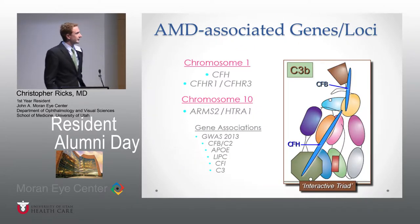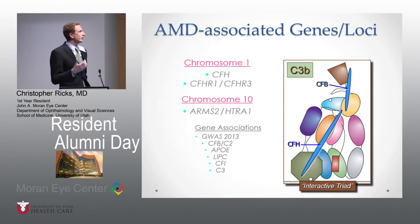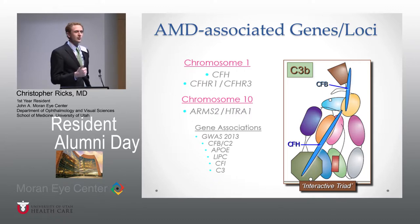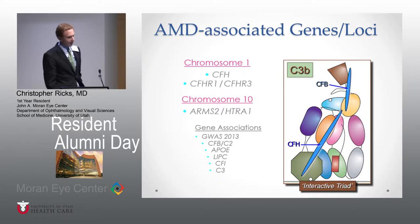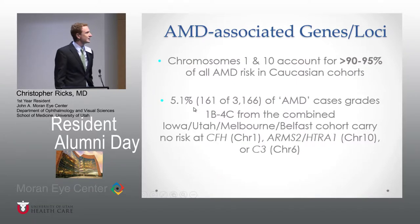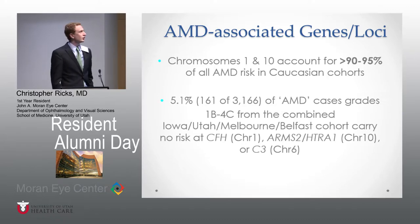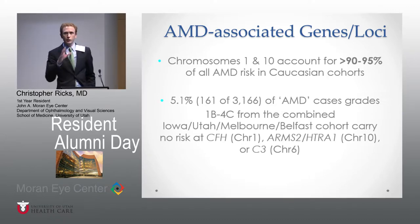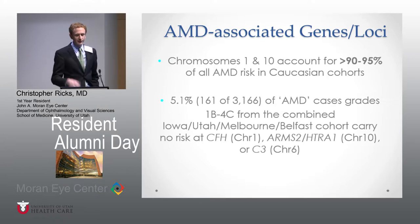One of the big things that's changed in the last decade is understanding what genes are associated with AMD. It turns out that chromosome 1 and chromosome 10 contribute a vast majority of the genetic risk factors to macular degeneration. There are several others that also associate with it, but studies have shown that about 5% of AMD is attributed to those other cases, and 90 to 95% are associated with either chromosome 1 or chromosome 10. So that gives us something we can really look at, really study, and really try to make a difference in.